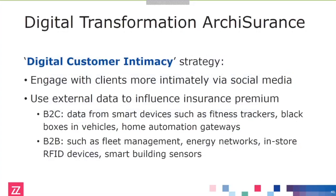Arc Insurance's digital customer intimacy strategy is a two-pronged approach. On the one hand, they want to engage with their clients more intimately using social media. On the other hand — perhaps more interesting — they want to use all kinds of external data to influence the insurance premium of their customers and make it a more competitive offer. If you know more about the behavior of your customers, you can more closely tailor the insurance premium. This can range from fitness trackers, black boxes in cars, or home automation gateways in the B2C market.